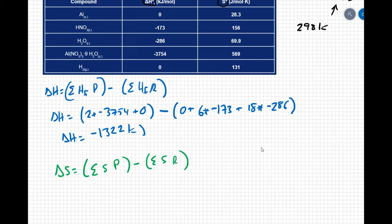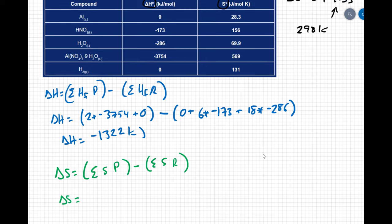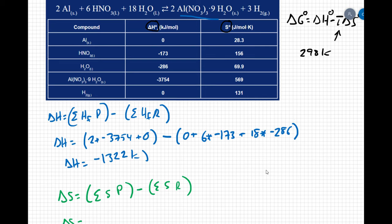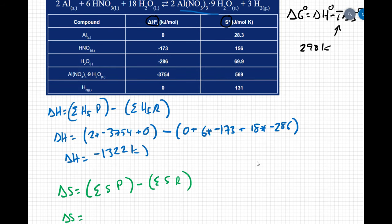So my delta S is going to equal the sum of my products. So my first product is going to be that aluminum nitrate so I can see that the entropy for the aluminum nitrate is 569. Again take a look at units, that's joules per mole kelvin, so I have 2 moles so I'm going to do 2 times 569 plus 3 times hydrogen so 3 times 131.